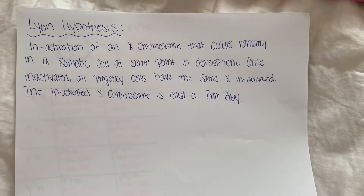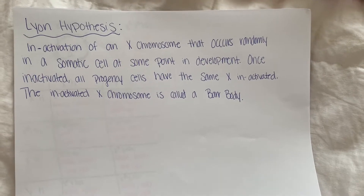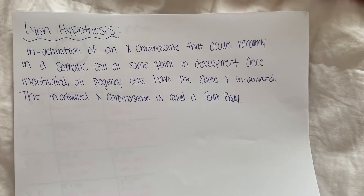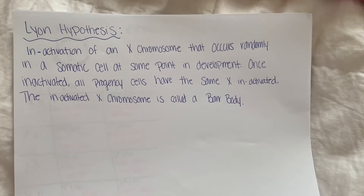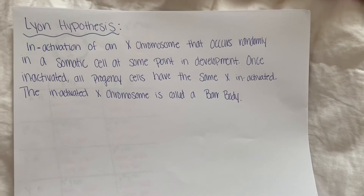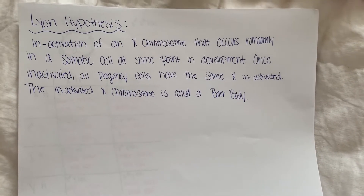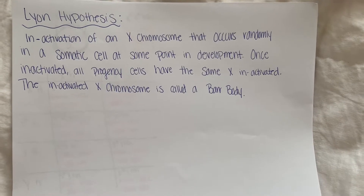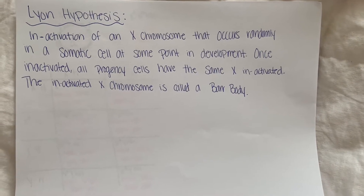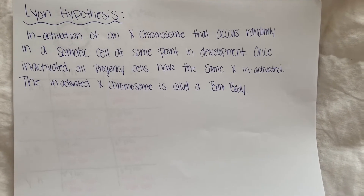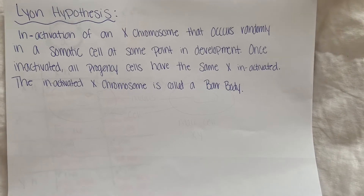The Lyon hypothesis is the inactivation of an X chromosome that occurs randomly in a somatic cell at some point in development. Once inactivated, all progeny cells have the same X inactivated. The inactivated chromosome is called a Barr body.